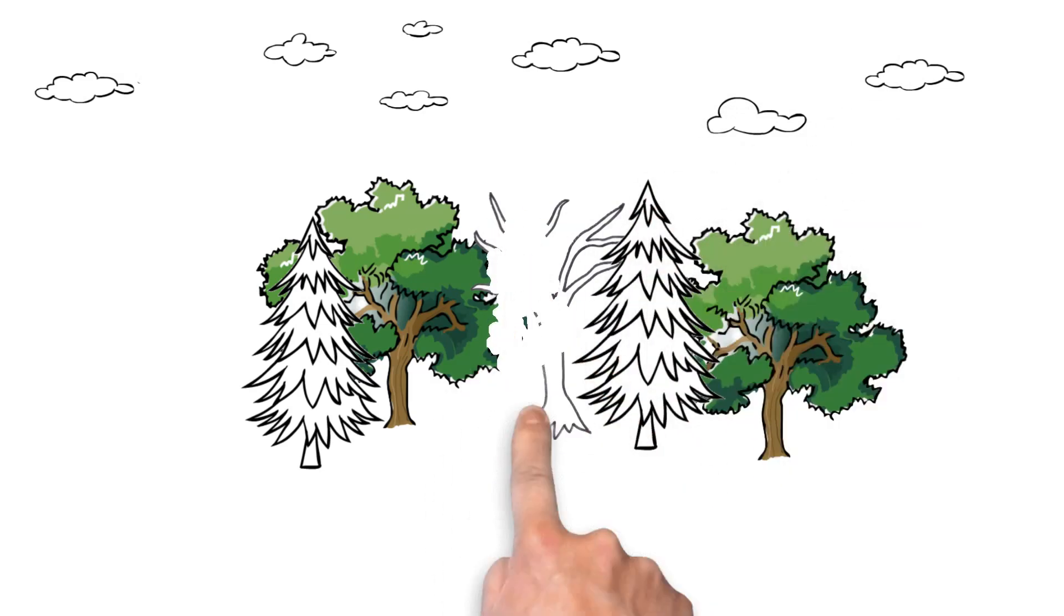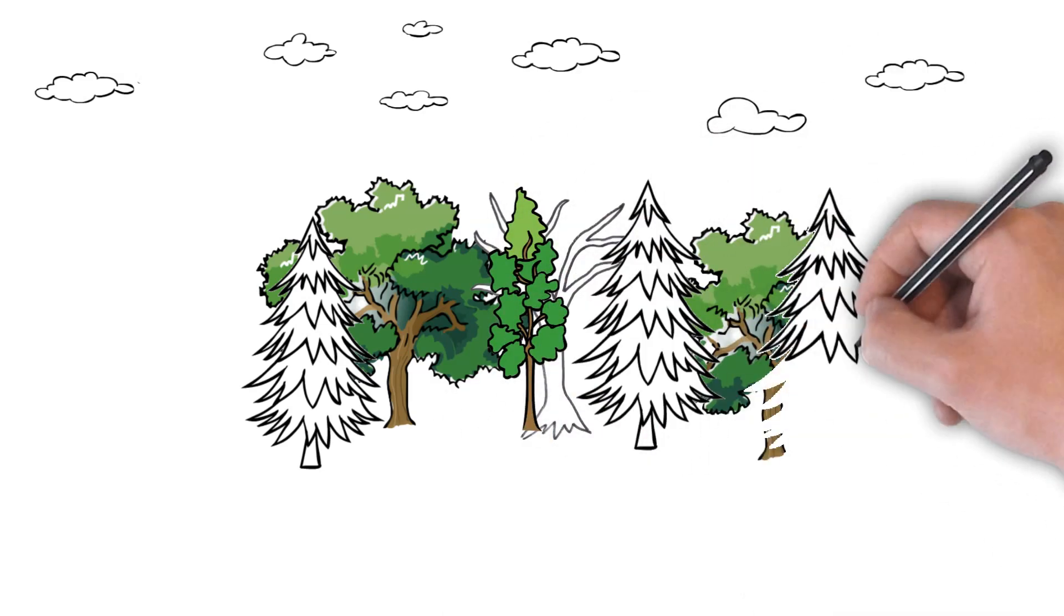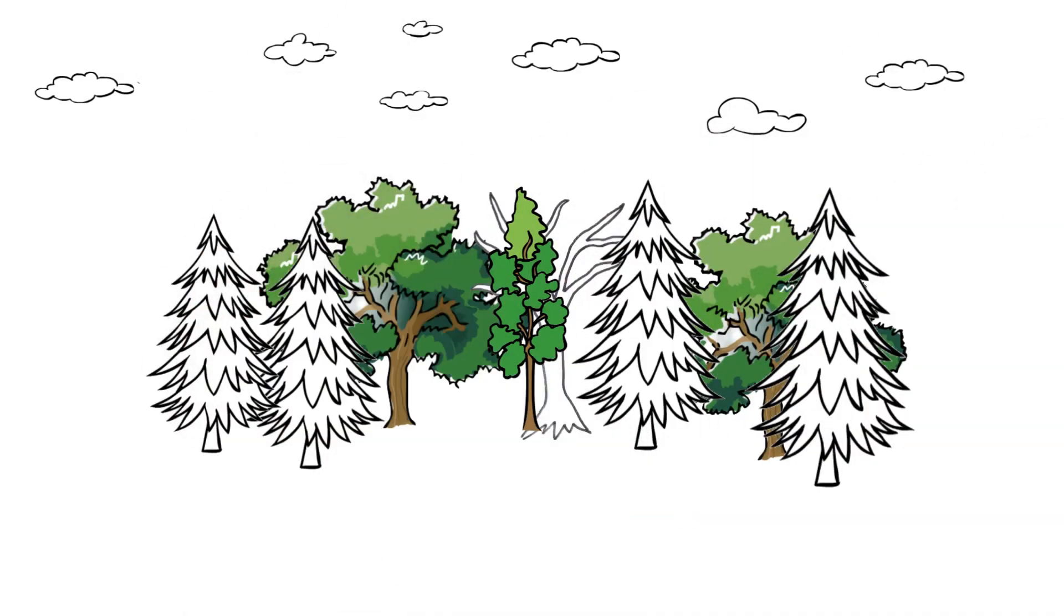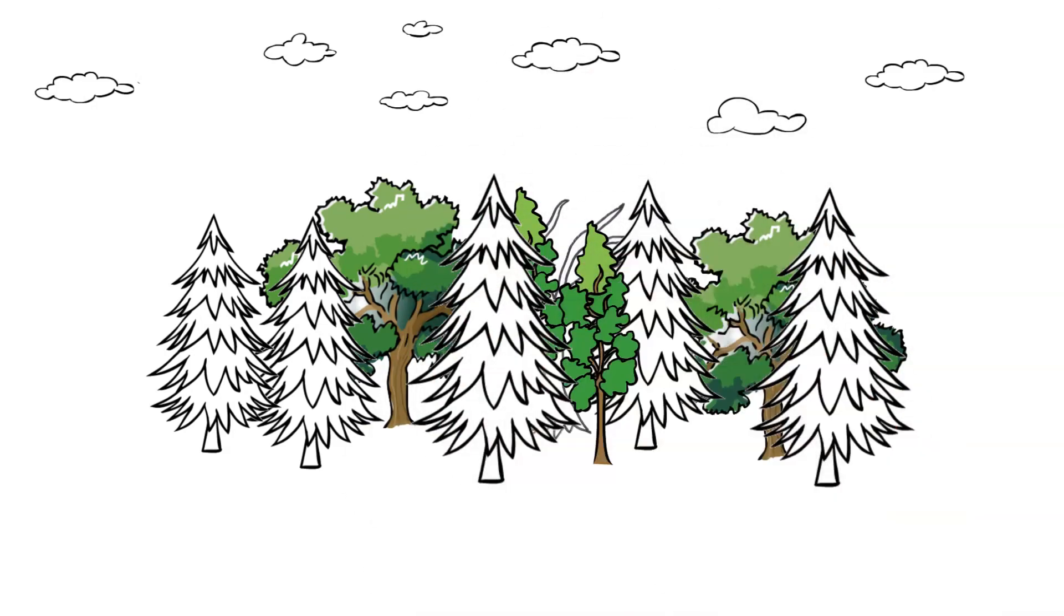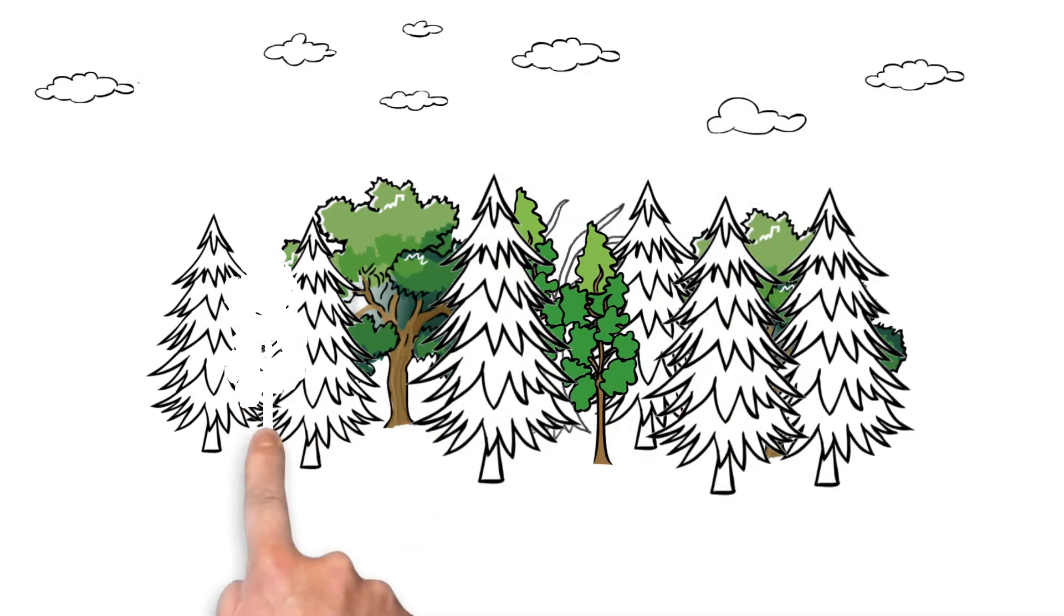We'll have some deciduous trees and we'll have some evergreen trees mixed in. But what you're going to notice is that the lower limbs of these trees are nearly touching the ground or sometimes they're actually touching the ground.